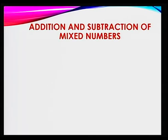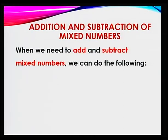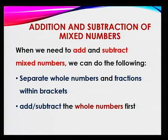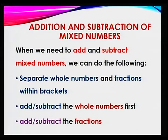Now, what happens when we need to add and subtract mixed numbers? Let's see the addition and subtraction of mixed numbers. When we need to add or subtract mixed numbers, we do the following. The first step: separate the whole numbers and the fractions within brackets. Second, add or subtract the whole numbers first, and then add or subtract the fractions.